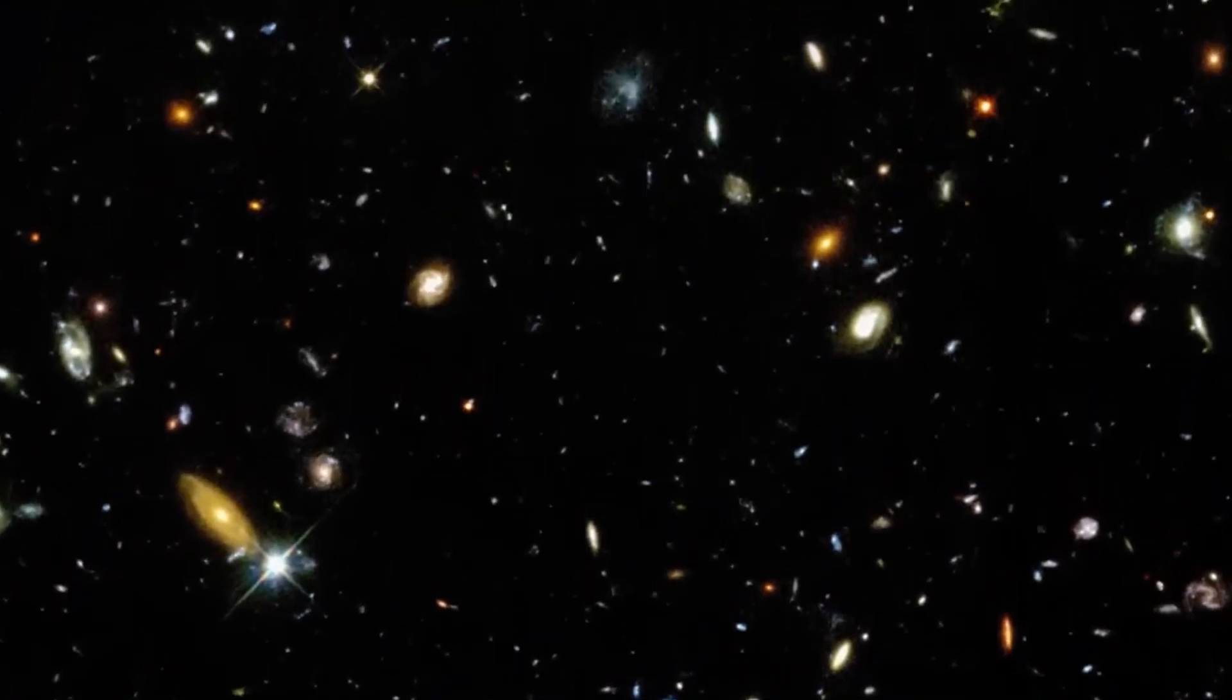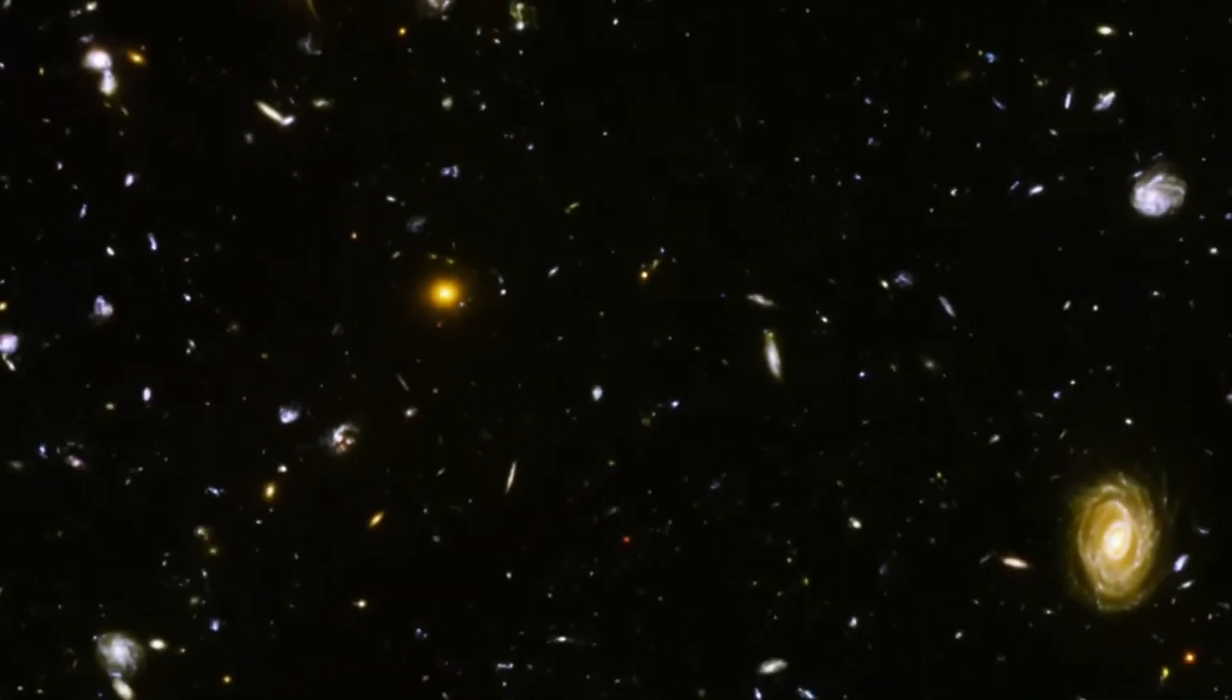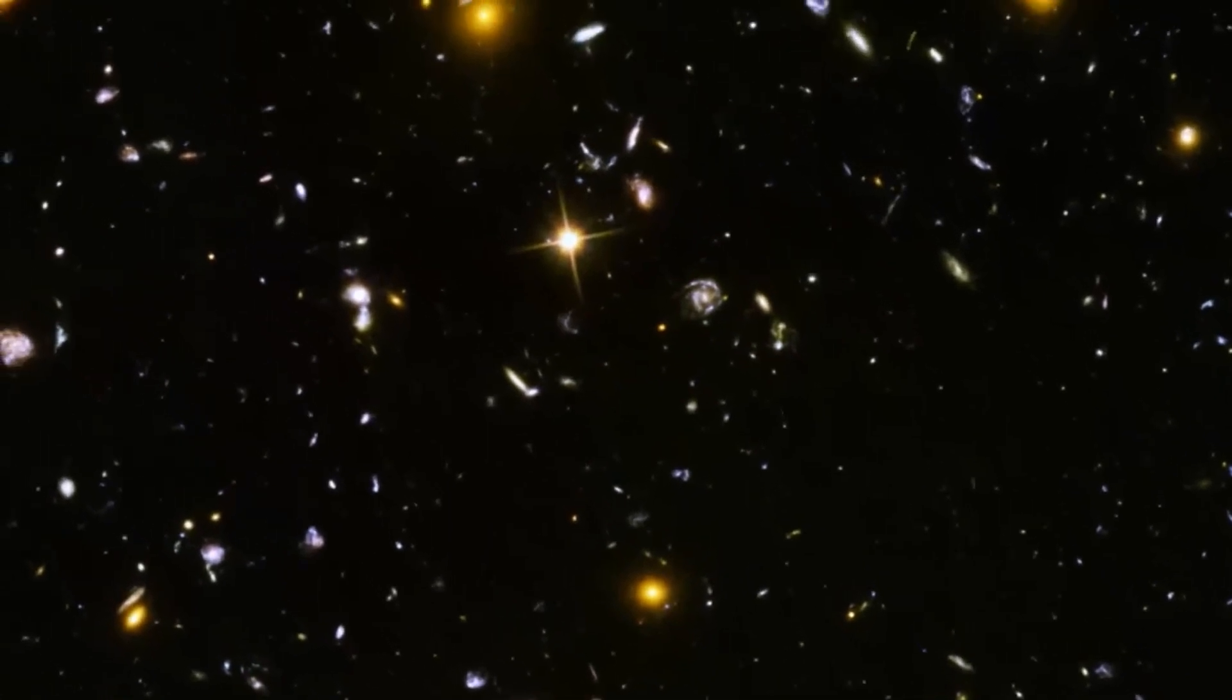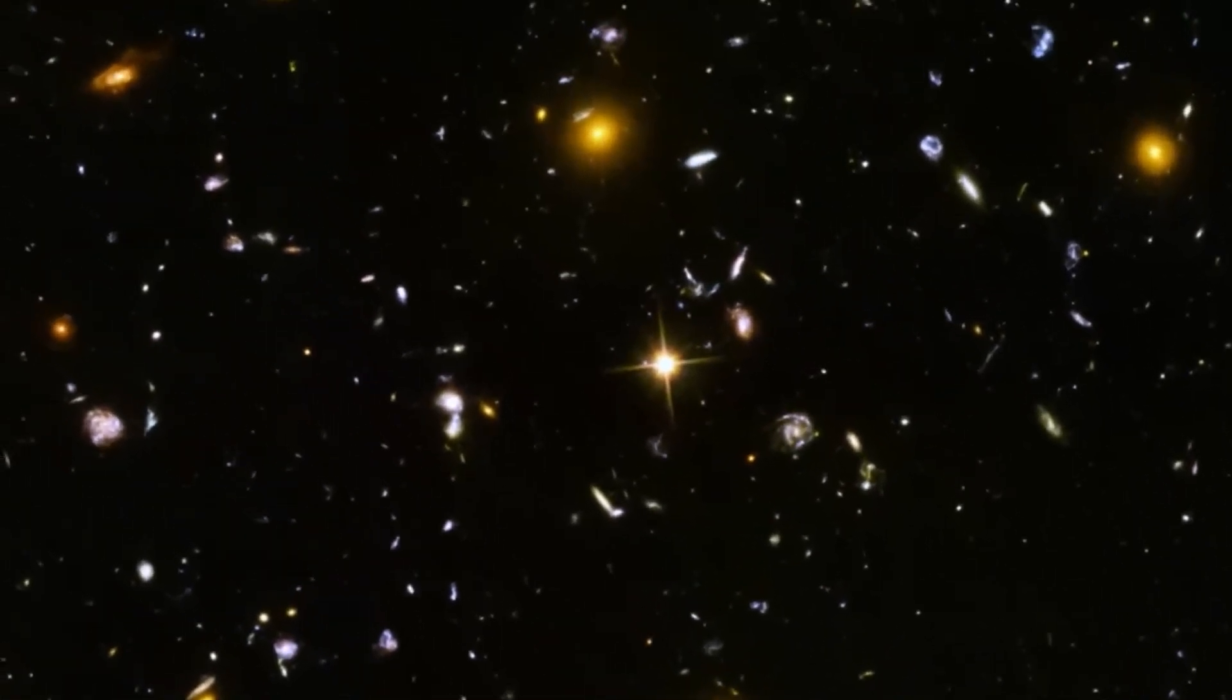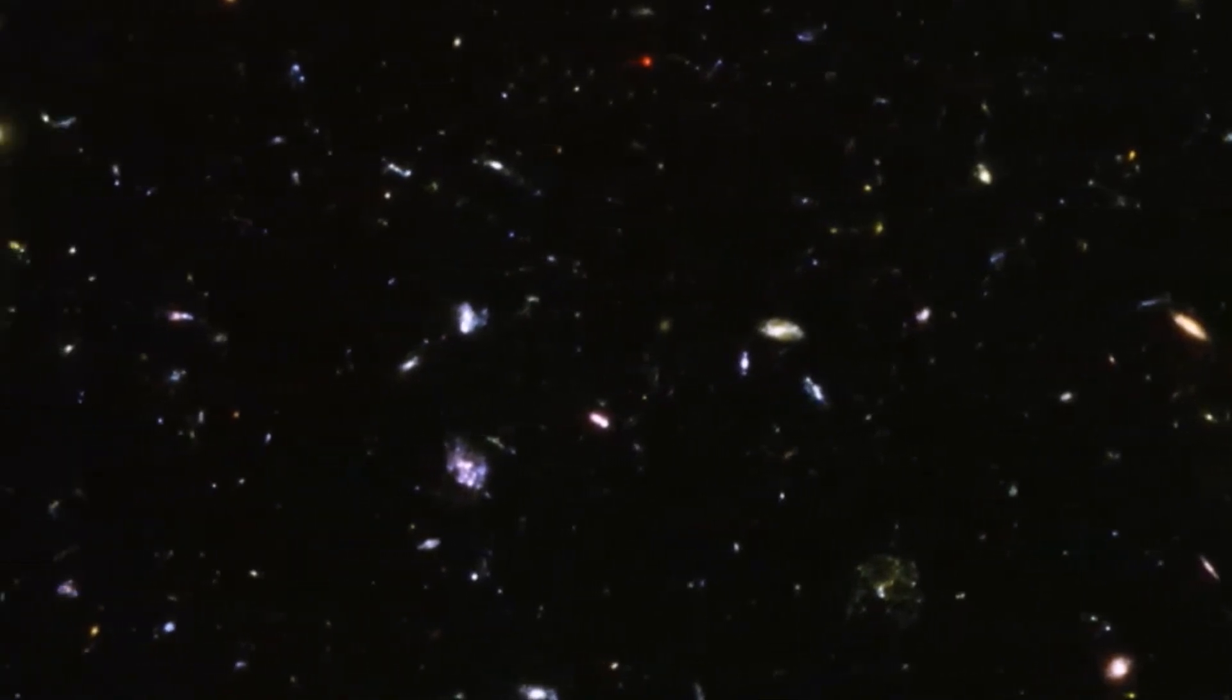The images reveal intricate details of the spiral arms, including the presence of massive bright blue star clusters and enormous clouds of gas and dust. These areas are known as star-forming regions, as they are where new stars are constantly being born.